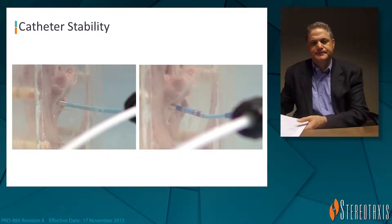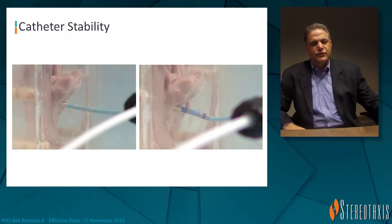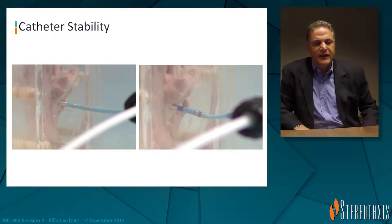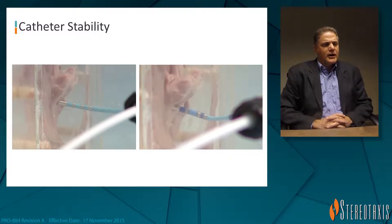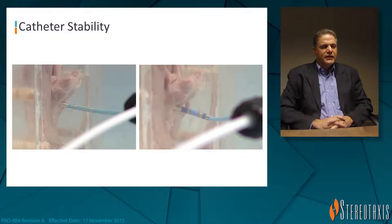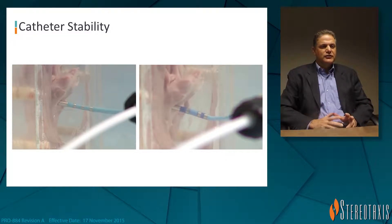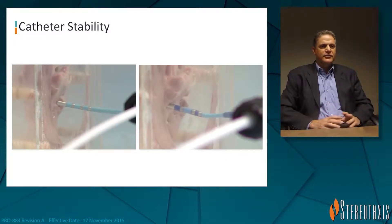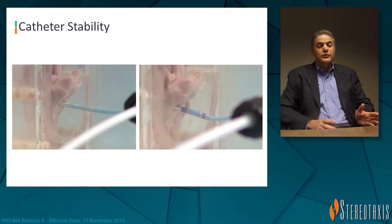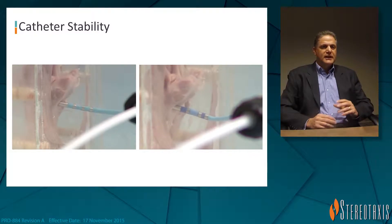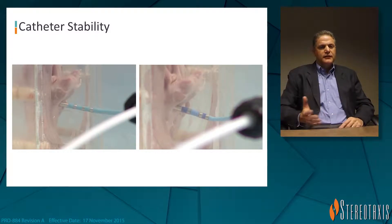On the left panel you will see a traditional manual catheter; on the right side you'll see a magnetic navigated catheter. What we're reminding ourselves here is that as tissue moves, the manual catheter with its stiffness is going to bounce on and off the surface — it is a complete biophysical characteristic of those catheters and really can't be avoided. This can be improved by improving contact force, but it still does not eliminate the fact that you're dealing with a stiff catheter structure in a mobile environment.